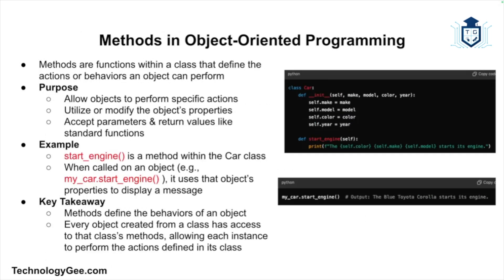Methods are functions defined inside a class that describe the behaviors or actions an object can perform. Methods allow objects to perform actions, often using or modifying the object's properties. Just like regular functions, methods can accept parameters and return values. In this picture we see the 'start_engine' method, which belongs to the car class. By using methods we can define the actions our objects can take, and each object created from a class has access to the methods defined in that class.